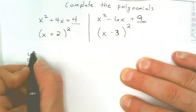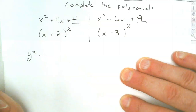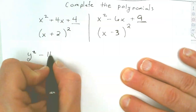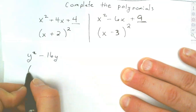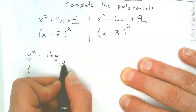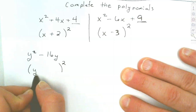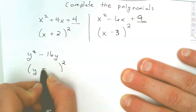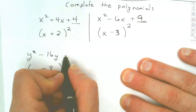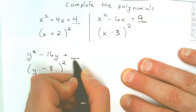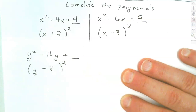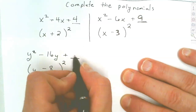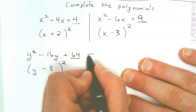How about y² - 16y? We take negative 16 and half it — half of negative 16 is negative 8. Then 8 squared is 64, so we add 64 to make it factor: (y - 8)² + 64.